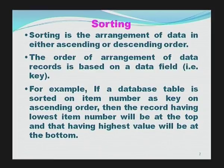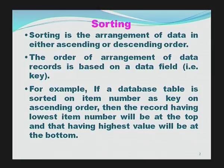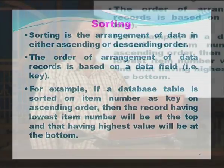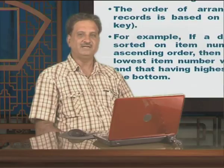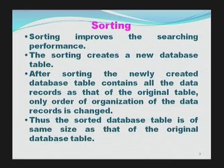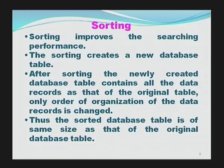For example, suppose I am having an item master table. If this database table is sorted on item number as the key in ascending order, then the records having the lowest item number will be at the top and those having the highest value will be at the bottom. This helps in reaching a specific record depending upon the value of item number. Sorting improves searching performance — if the table is sorted, it will be easier to move to the specific record required.